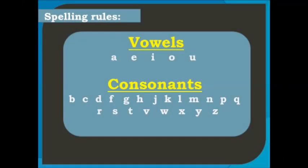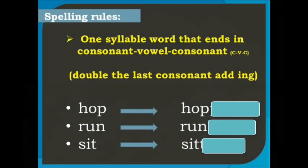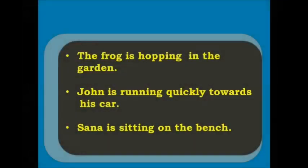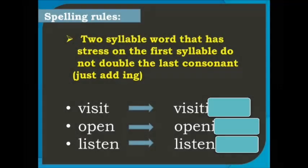Dear students, you already know that a, e, i, o, u are vowels and the rest of the letters are consonants. For a one-syllable word that ends in consonant-vowel-consonant — also called a CVC word — we double the last consonant and add ing. For example: hop → hopping, run → running, sit → sitting. The frog is hopping in the garden. John is running quickly towards his car. Sana is sitting on the bench.